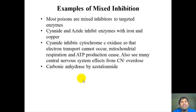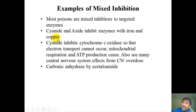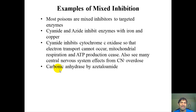Examples of mixed inhibition include cyanide and azide, which are mixed inhibitors of enzymes requiring metal cofactors iron and copper — including electron transport chain complexes. Another example is a drug that is a mixed inhibitor of carbonic anhydrase, an enzyme with 12 isoforms important in blood buffering, as discussed in the hemoglobin lesson.